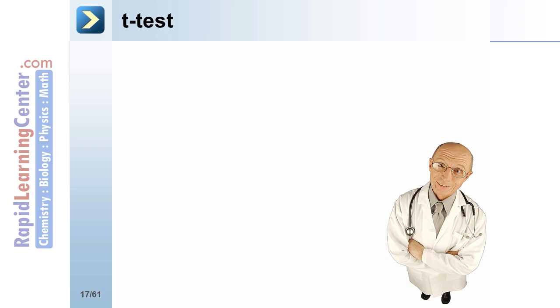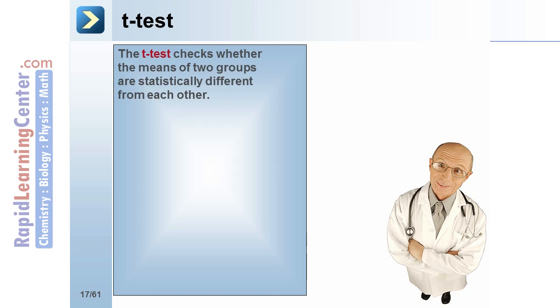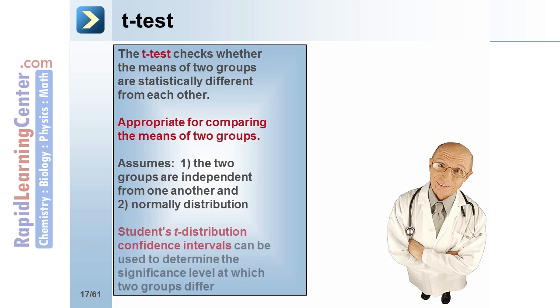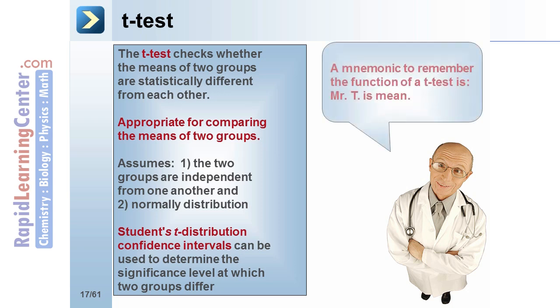Now let's take a closer look at statistical tests used to compare data from different populations. The t-test checks whether the means of two groups are statistically different from each other. A t-test is appropriate for comparing the means of two groups. It assumes that the two groups are independent from one another and that the populations in both groups are normally distributed. The Student's t-distribution confidence intervals can be used to determine the significance level at which two groups differ. A mnemonic to remember the function of a t-test is: Mr. T is mean.